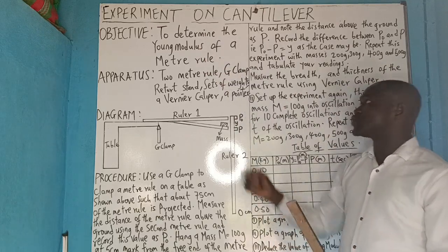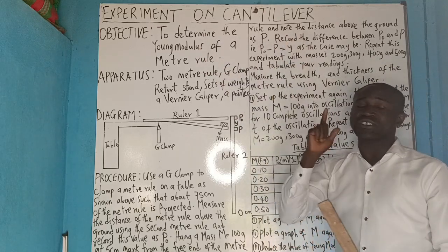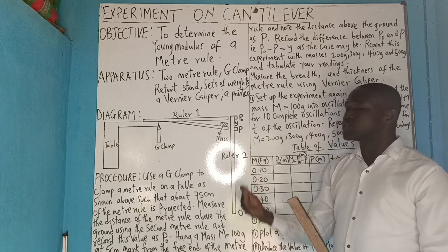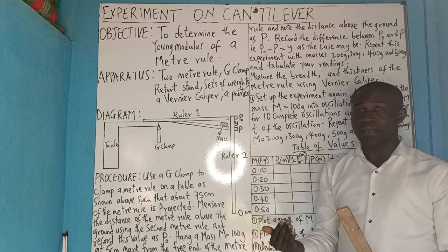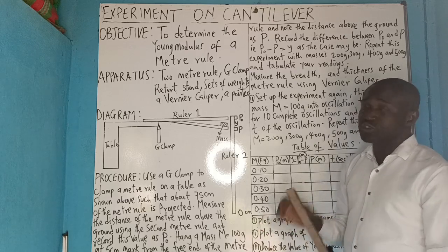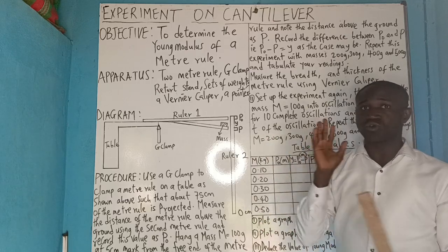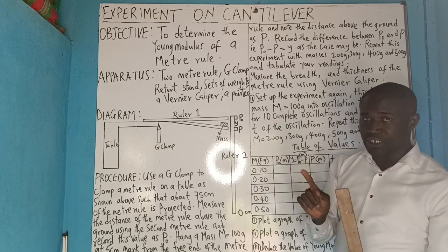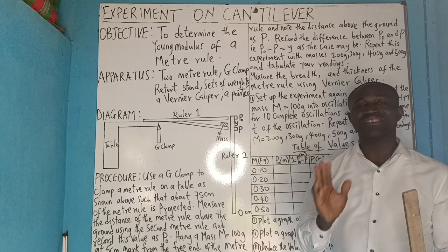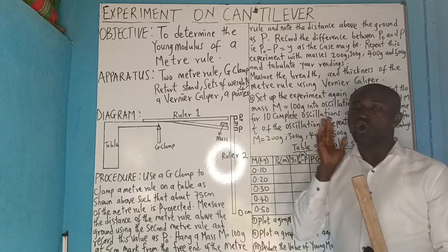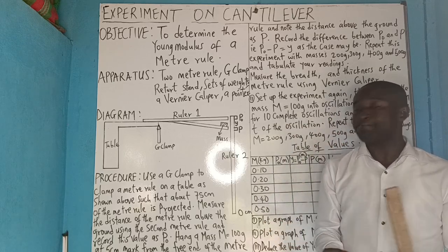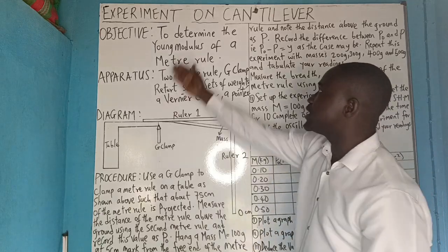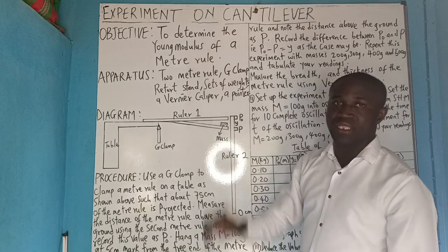As we embark on this experiment, you will see that it applies the principle of bending and the principle of depression. It is important to note that this experiment will be of two types: the one involving the use of the principle of bending or depression, and the one that makes use of oscillations. It has the objective to determine the Young's modulus of a meter rule.